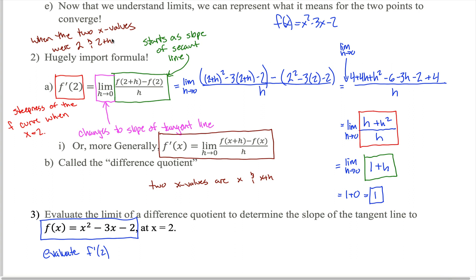That might have seemed a little weird to not give a numeric value for the second x value. But by calling the second x value 2 plus h, we can modify the expression that gives the slope of the secant line into an expression that gives the slope of the tangent line by considering the limit as h approaches 0. When h approaches 0, the two x values get infinitely close together — that idea is the key to calculus 1.